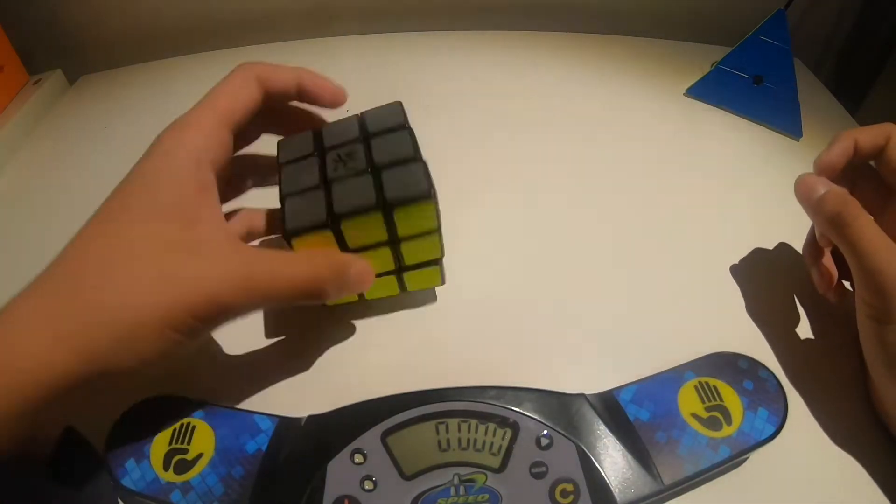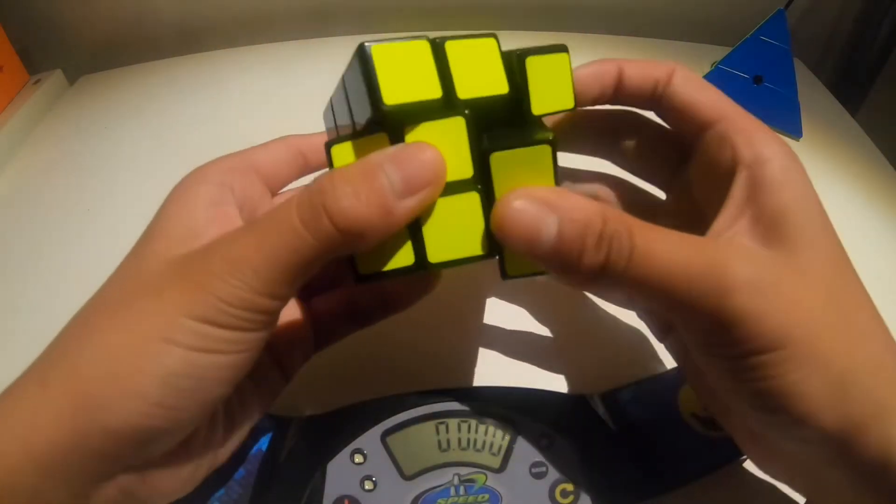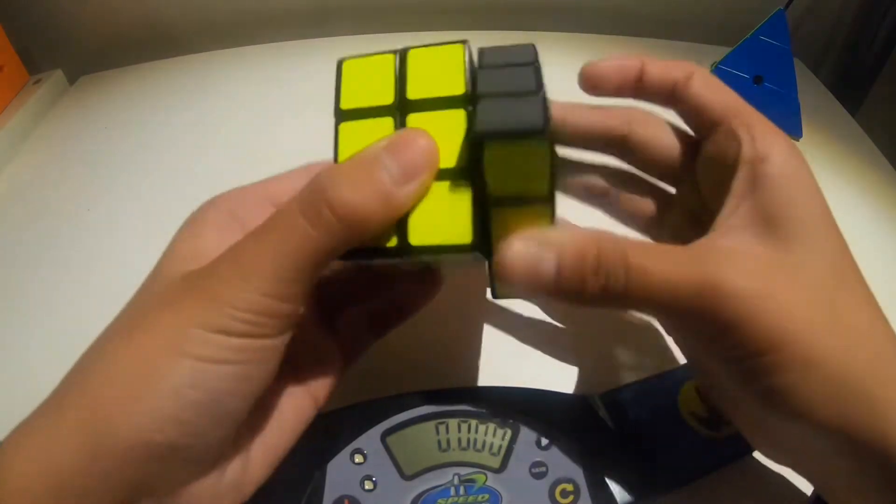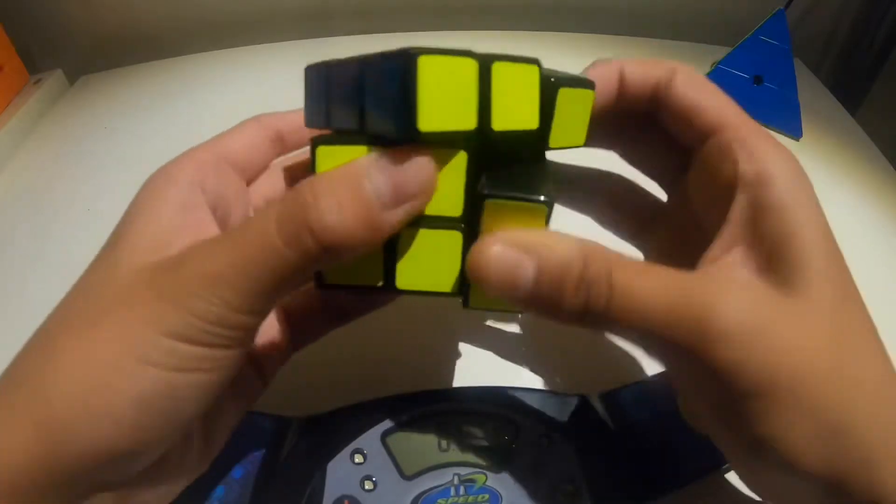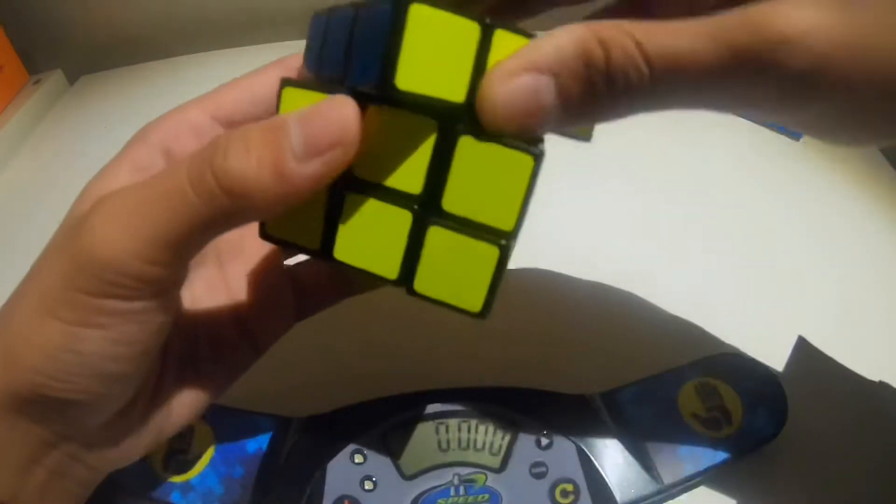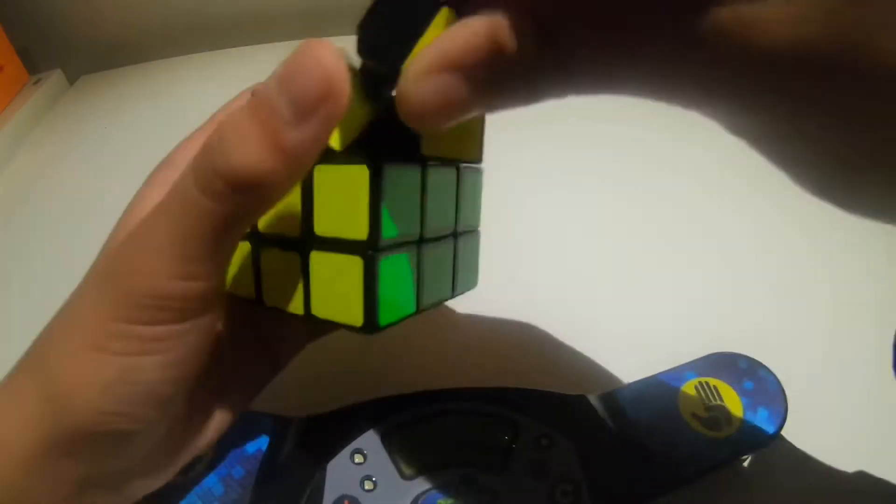So this is some Dino cube. I actually do not know which one it is, but I can corner cut it. Maybe it's the Guhong V1 or V2? If anyone can tell me what cube this is, leave it in the comments.